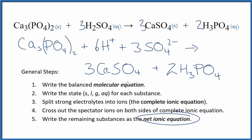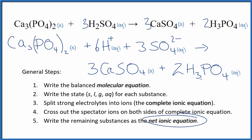Let me clean this up, write the states. We'll have a net ionic equation. So this is the balanced net ionic equation for the calcium phosphate and sulfuric acid.